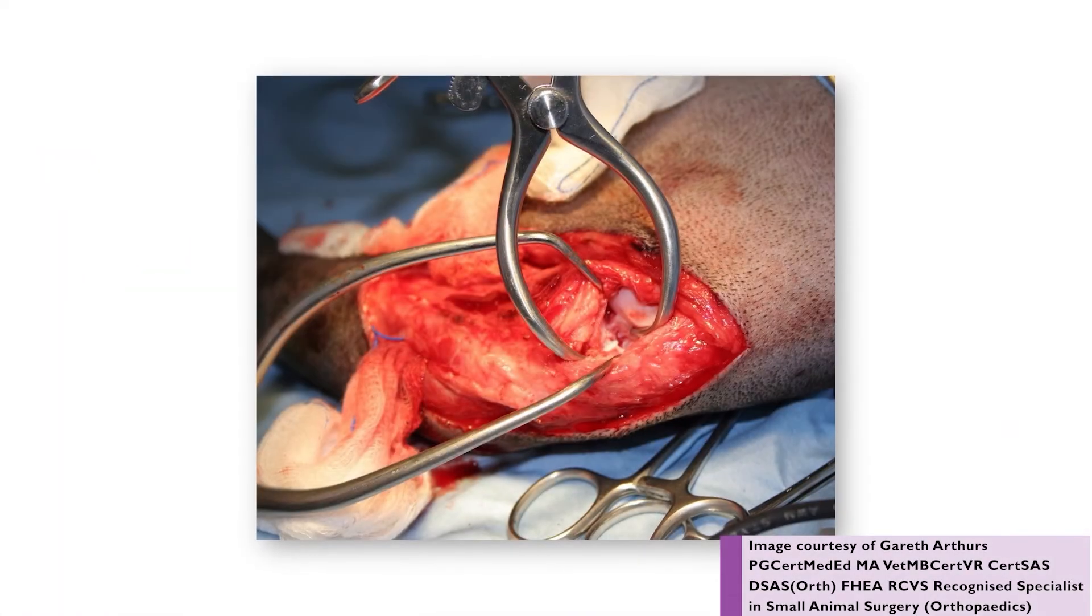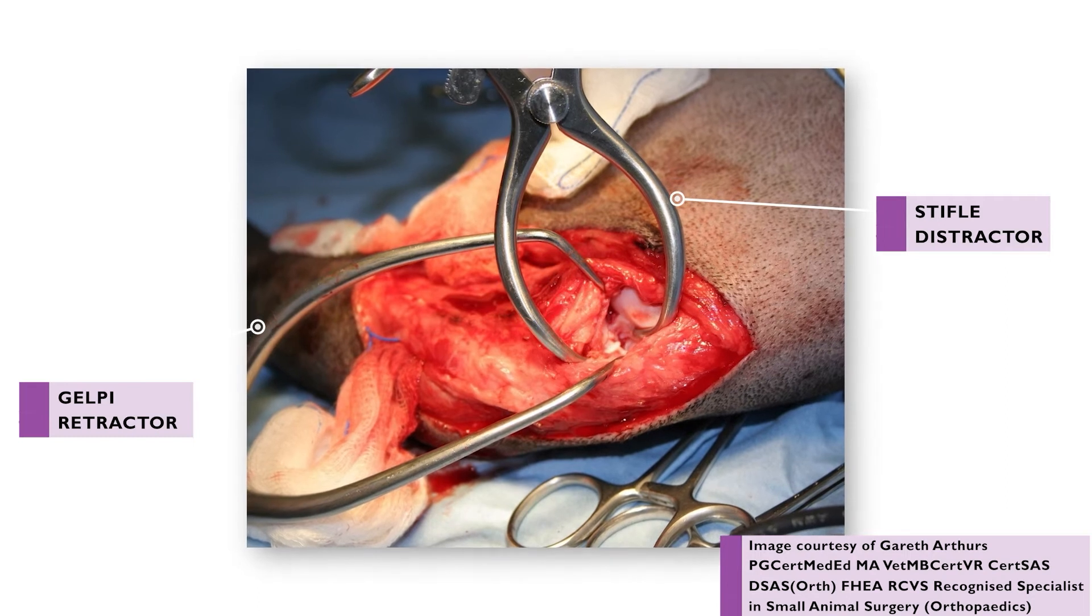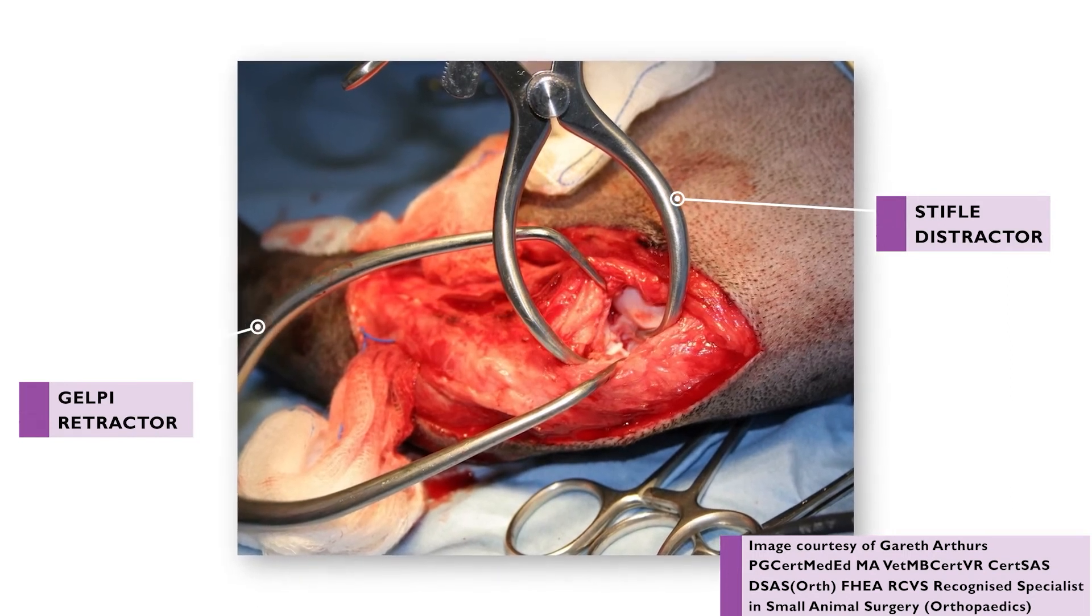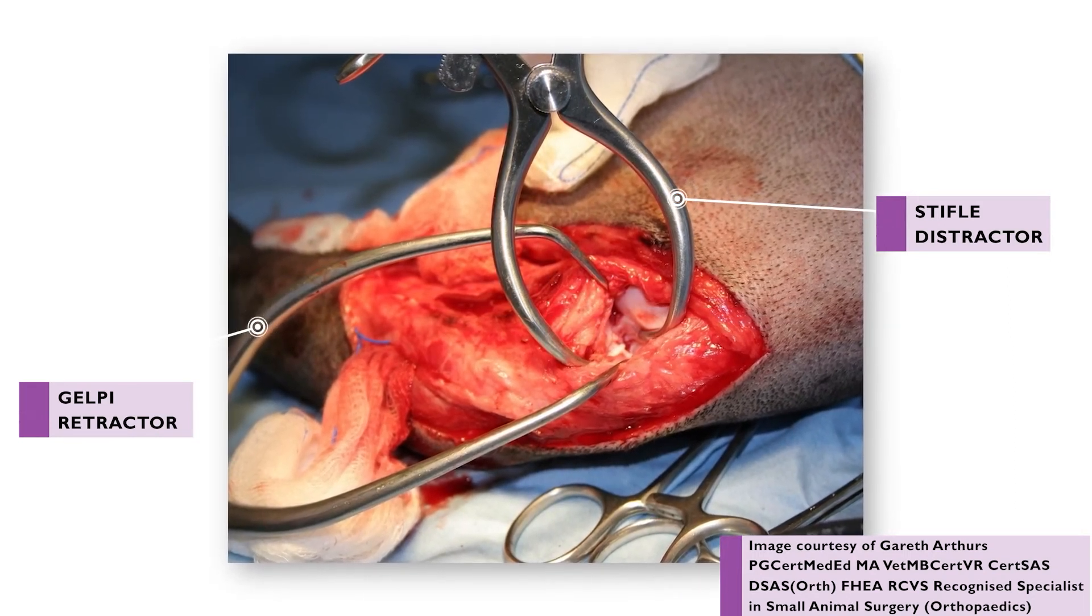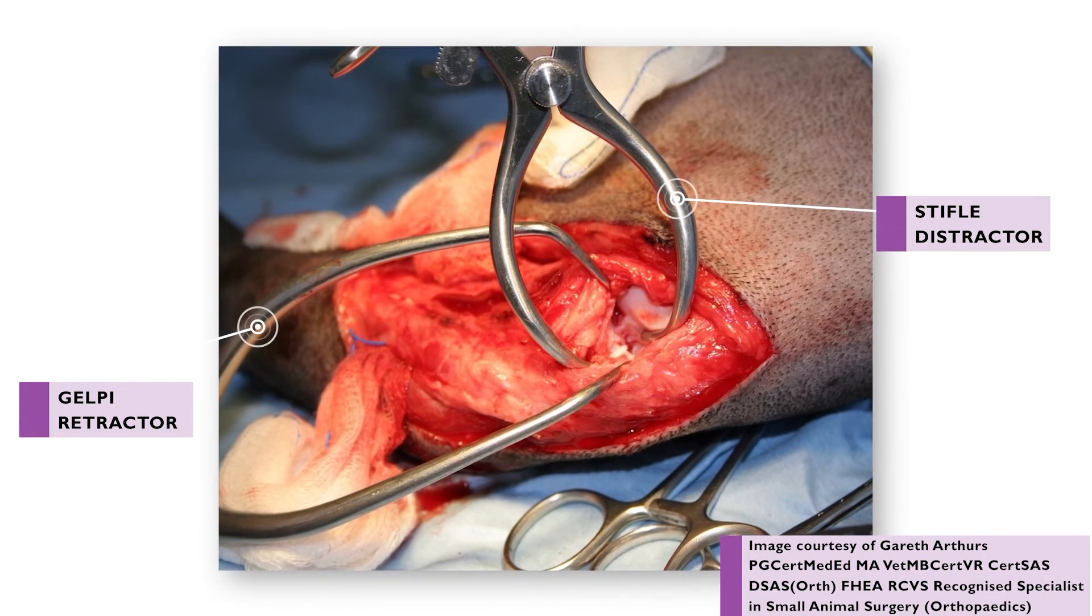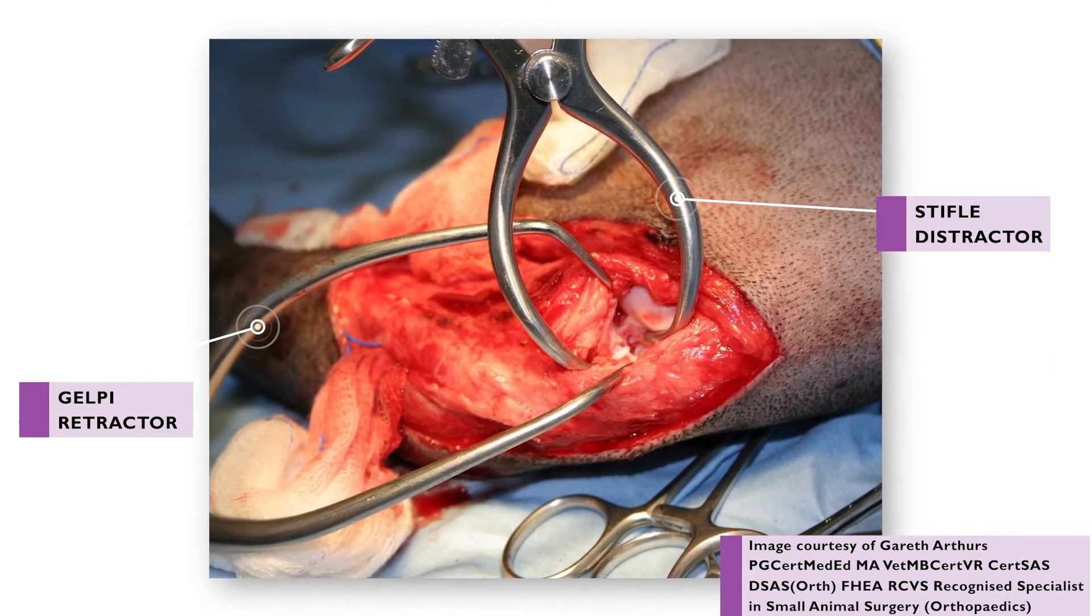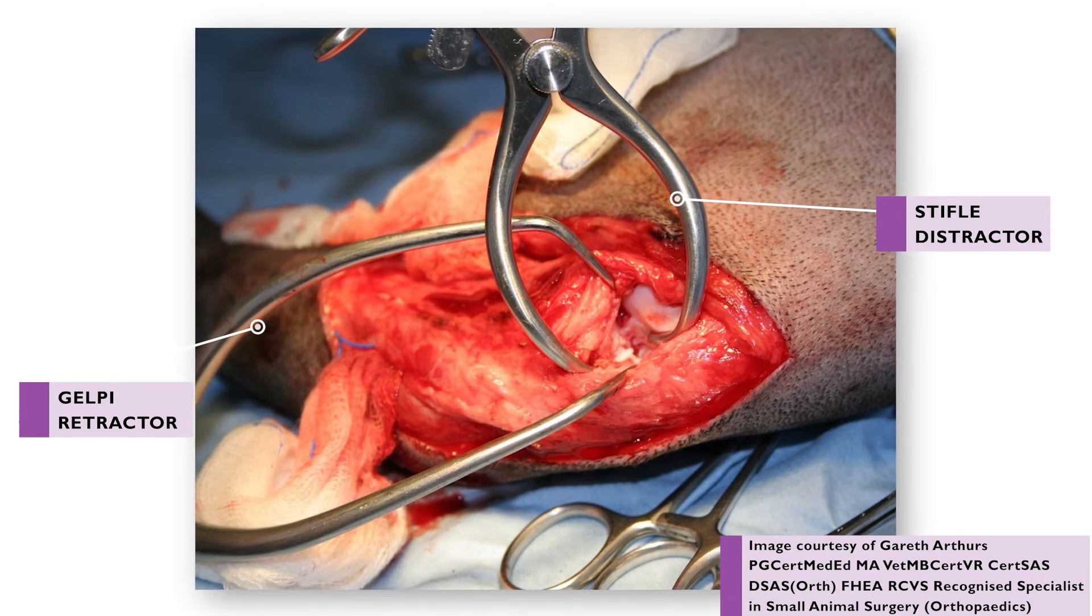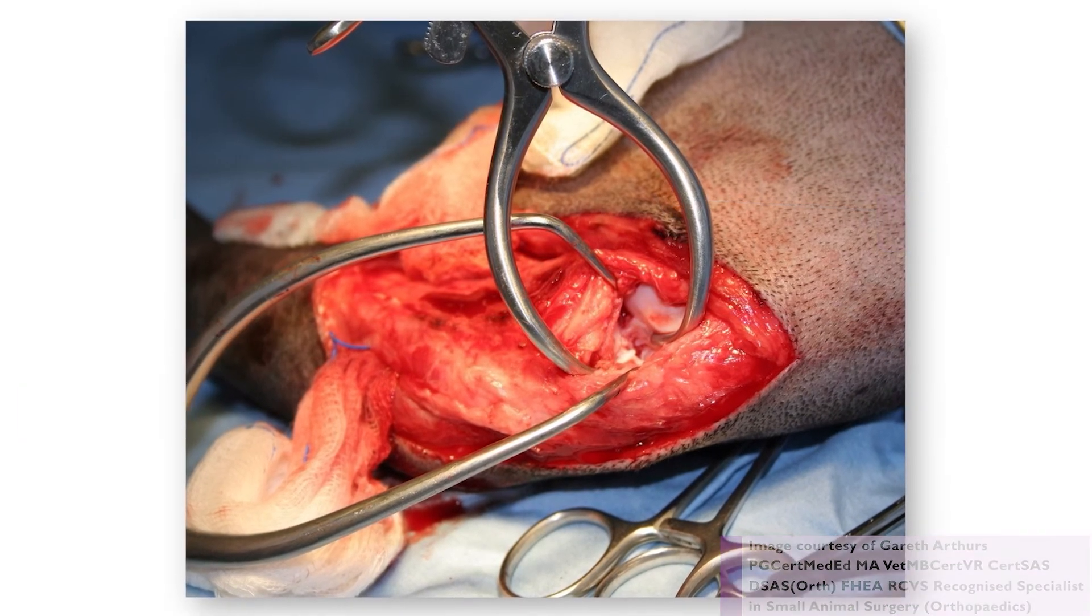A surgeon will commonly use a stifle distractor in conjunction with a gelpie. A gelpie is a soft tissue retractor inserted at right angles to the stifle distractor to retract the soft tissue of the joint to further improve visualization.